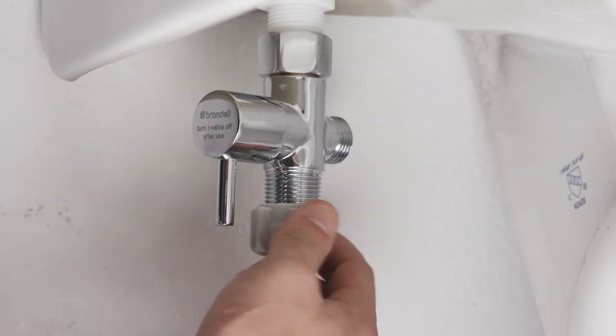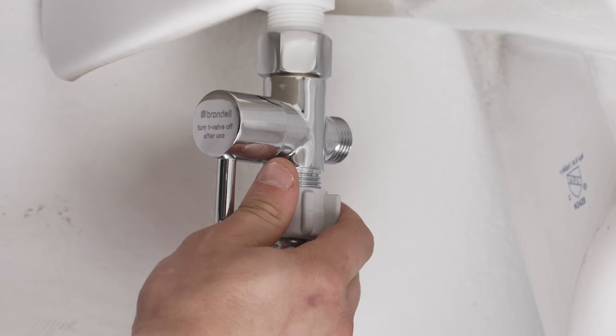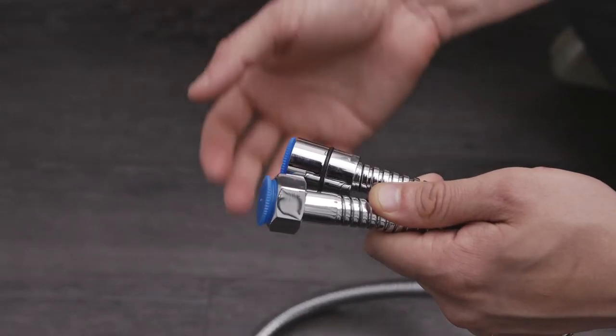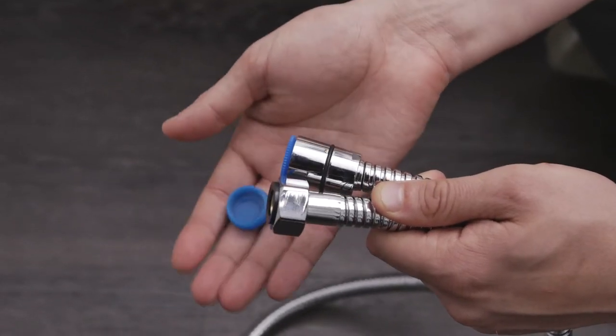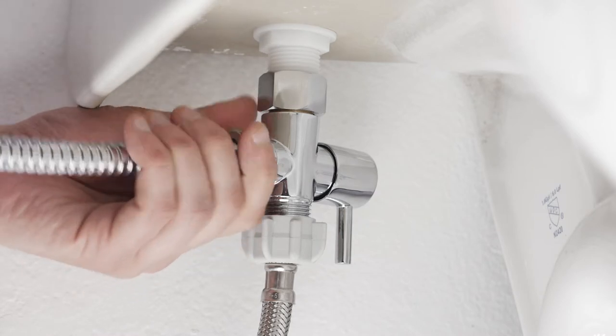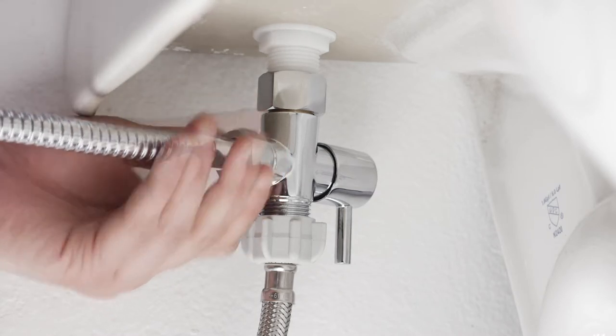Reconnect the flexible supply line to the bottom of the T-valve. Remove the blue caps on the ends of the bidet hose and attach one end of the bidet hose to the open end of the T-valve.